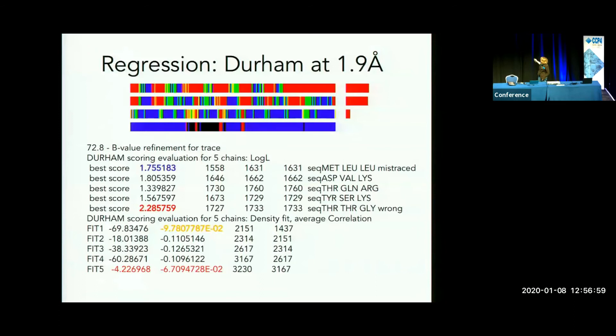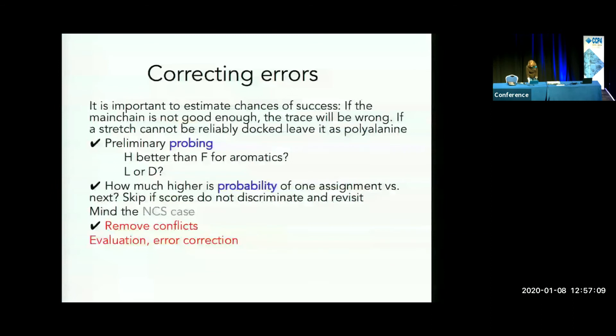One of the things that throws you off is if your main chain trace is wrong — that's what happens here. Black indicates a wrong assignment because there's a wrong connection, so there's no way those can be right, and as a consequence the trace has nowhere to go anymore. There's a lot to do about correcting errors, mainly on the main chain, which is an interesting challenge anyway — we need to change the algorithm to interpret cryo-EM maps, where the properties of those maps and their most prominent features differ.